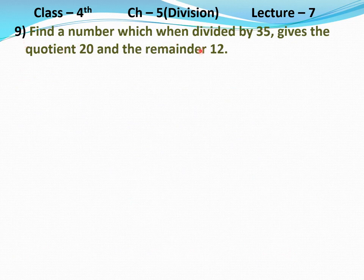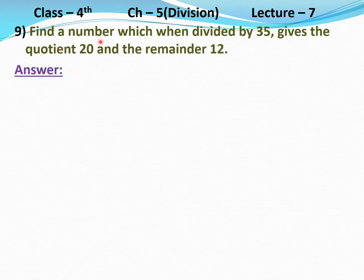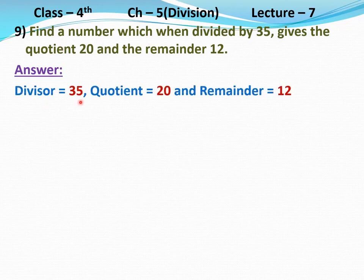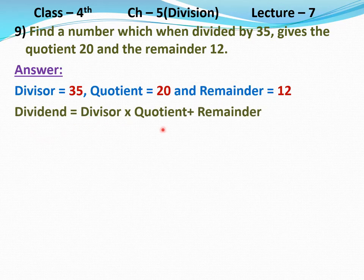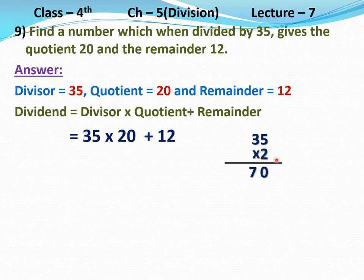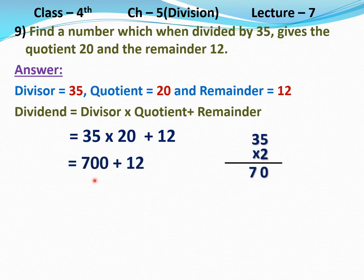Question number 9: Find a number which when divided by 35 gives the quotient 20 and the remainder 12. So divisor equal to 35, quotient equal to 20, remainder equal to 12. We have to find the dividend. Dividend equal to divisor multiply quotient plus remainder, equal to 35 multiply 20 plus 12. 35 multiply 20 equal to 700. Then 700 plus 12 equal to 712. Therefore, dividend equal to 712.